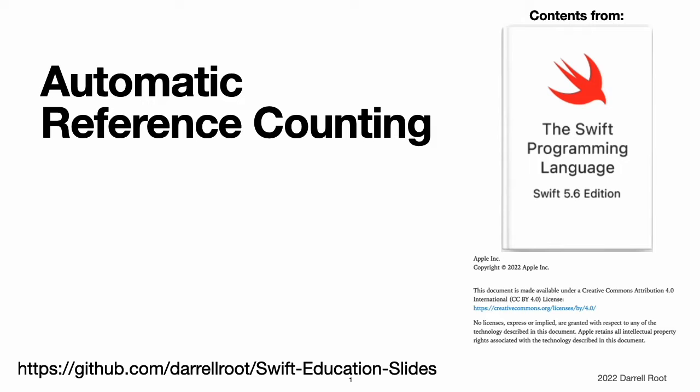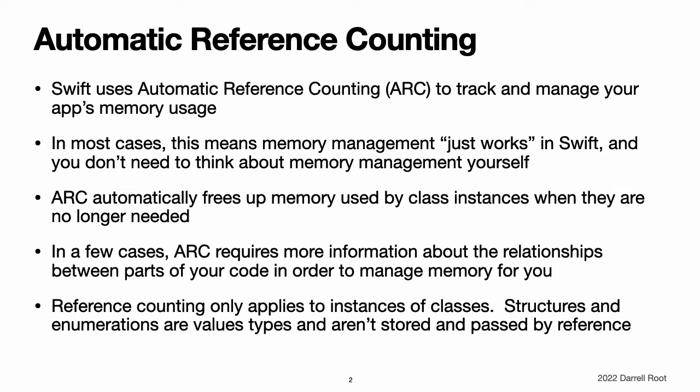Automatic Reference Counting. Swift uses Automatic Reference Counting, ARC, to track and manage your app's memory usage. In most cases, this means that memory management just works in Swift, and you do not need to think about memory management yourself. ARC automatically frees up the memory used by class instances when those instances are no longer needed.